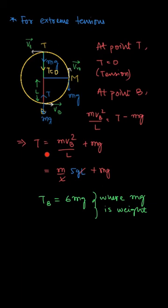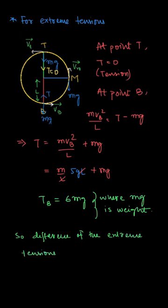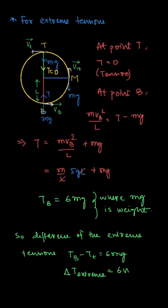From that equation we get our tension. Substituting vb as root 5gl, the tension at the bottom point Tb comes out to be 6mg. The tension at the topmost point Tt is zero. So the difference of extreme tensions Tb minus Tt equals 6mg minus 0, which equals 6mg or 6W — six times the weight. The difference of extreme tensions is proportional to the weight of the object.